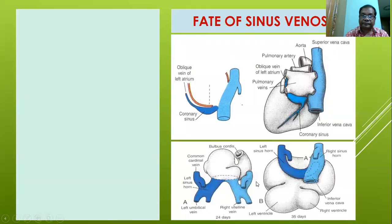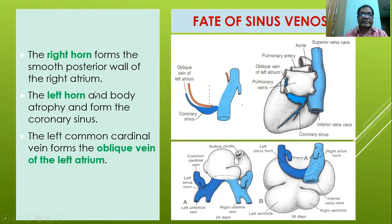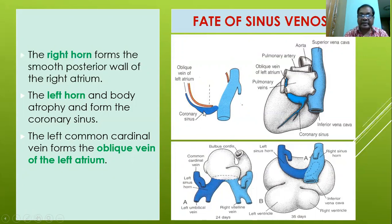Regarding the fate of the sinus venosus: the right horn forms the smooth posterior wall of the right atrium, while the left horn and the body atrophy and form the coronary sinus. The left common cardinal vein forms the oblique vein of the left atrium. The right horn of the sinus venosus is absorbed into the right atrium where the superior and inferior vena cava connect. The left horn atrophies, and its dilated portion remains as the coronary sinus, while the oblique vein of the left atrium arises from the left common cardinal vein.